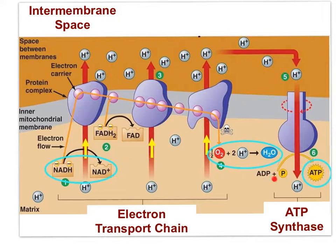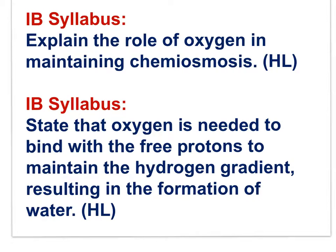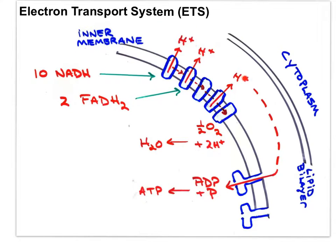Here are two more IB syllabus statements: explain the role of oxygen in maintaining chemiosmosis; and state that oxygen is needed to bind with free protons to maintain the hydrogen gradient, resulting in the formation of water. As hydrogen ions diffuse out of the intermembrane space into the matrix, they are taken up by oxygen to form water, and this serves to maintain the gradient — high concentration of hydrogen ions in the intermembrane space, low in the matrix.